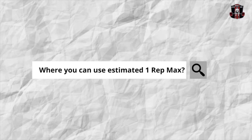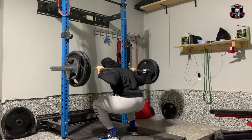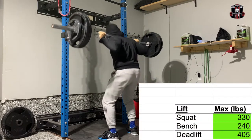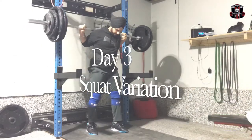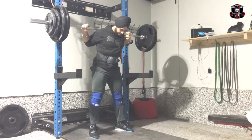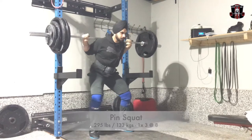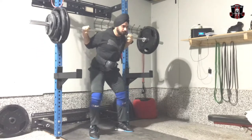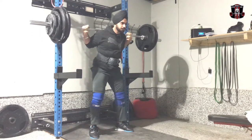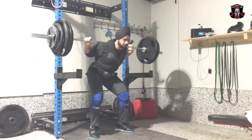You can also use estimated one rep max at the start of your program. On the first tab of the Calgary Barber eight-week program, you input your one rep max. In my previous video I suggested putting 95% of your one rep max — but if you're not sure of your actual one rep max, calculate your estimated one rep max and use that for your training maxes.